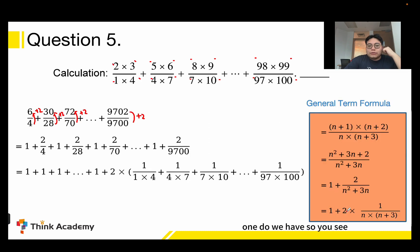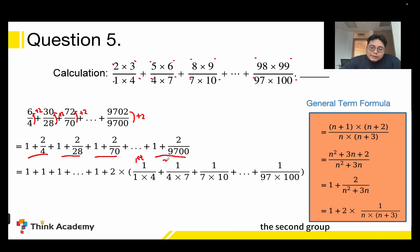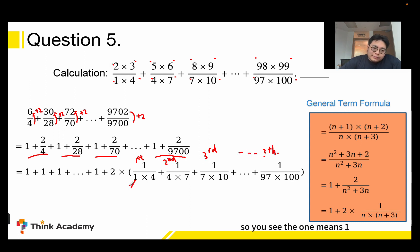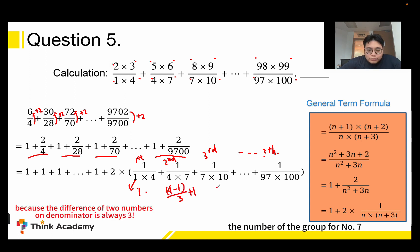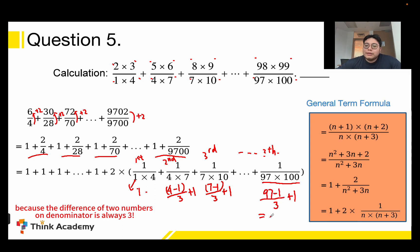Next, let's calculate how many 1s we have. The first group has denominator 1×4, the second has 4×7, the third has 7×10. To find the group number, we use the formula: (first number − 1) ÷ 3 + 1. For example, 7: (7−1)÷3 + 1 = 2+1 = 3, so it's the third group. For the last group with 97: (97−1)÷3 + 1 = 32+1 = 33. So we have 33 ones.